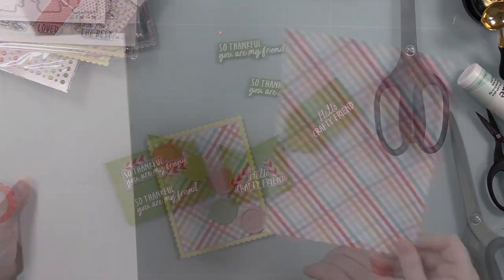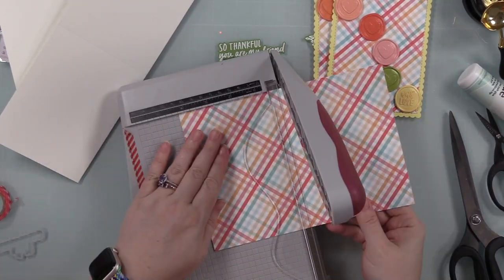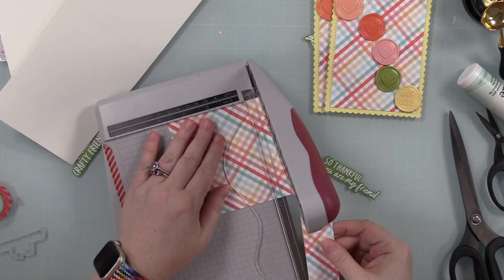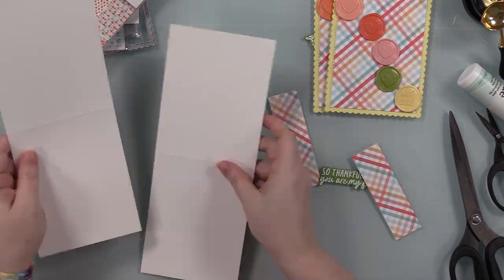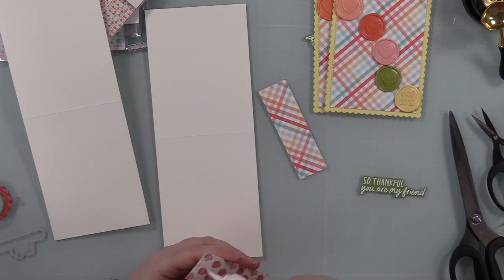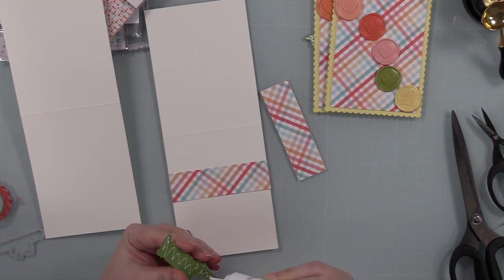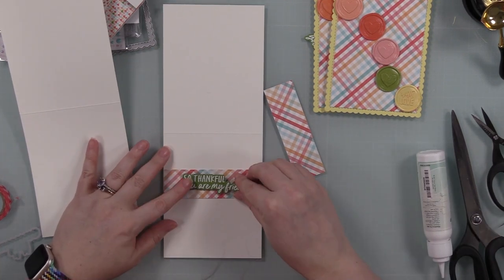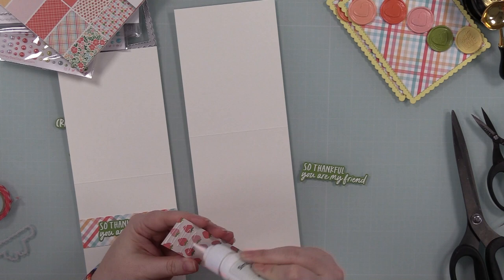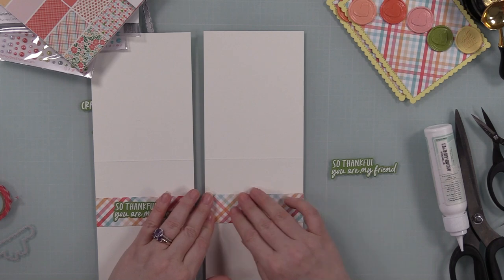So got those taped into place and then I die cut them. And then I took that same pattern paper from the Happy Hearts pack because you get two sheets of every pattern. So I trimmed down a couple of strips from the second sheet so I could add it to the insides of my cards. My cards are going to be top folding A2 white note cards, so four and a quarter by five and a half. So I adhered the little pattern paper strip and then I adhered the sentiment so it just gives it that little extra something and ties it all together.